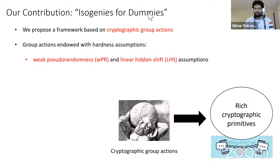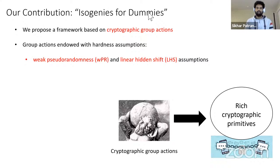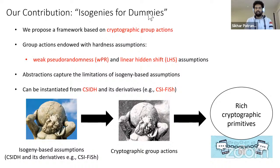Our main contribution can be summarized in three simple words: isogenies for dummies. We propose a very simple and abstract framework that allows you to build cryptography from certain isogeny-based assumptions without necessarily being an expert in all the underlying mathematical details. The hope is that the broader cryptography community would be able to use this framework to build many rich crypto primitives. The main technical tool is called cryptographic group actions — commutative and regular group actions endowed with certain natural cryptographic hardness assumptions. The framework can be instantiated from CSIDH and its derivatives, such as SeaFish.